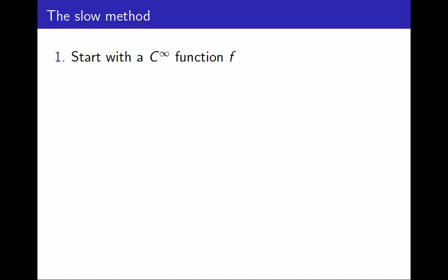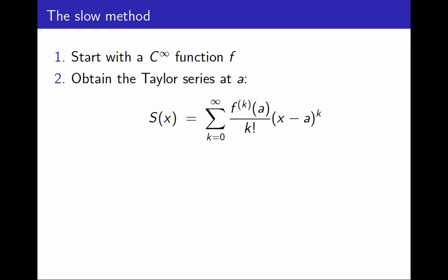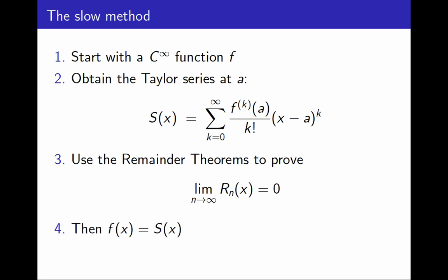If we start with a function that is C infinity, we can first compute all its derivatives and use those to write the Taylor series at a point given by this formula. And then we have to prove, using the remainder theorems, that the limit of the remainders is 0 as n goes to infinity, and then the function is equal to its Taylor series. But this is the slow method. I want something faster.